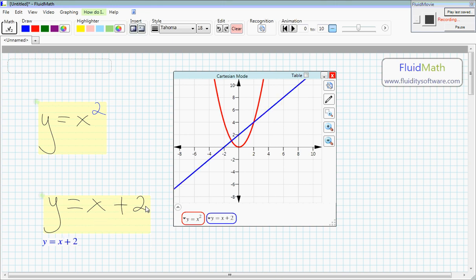You can edit math pretty quickly by, for example, scribbling out the 2 and writing in a 4. And then the graph will interactively adjust.